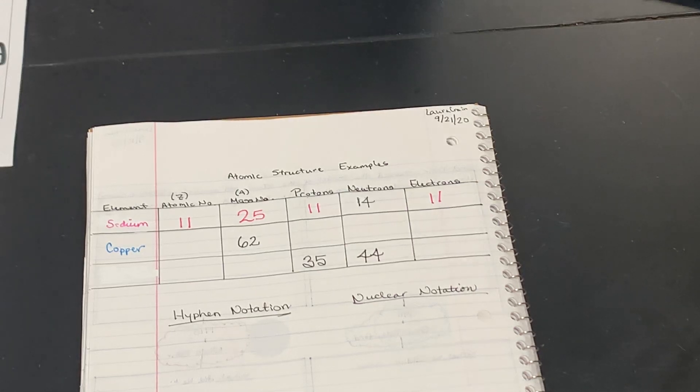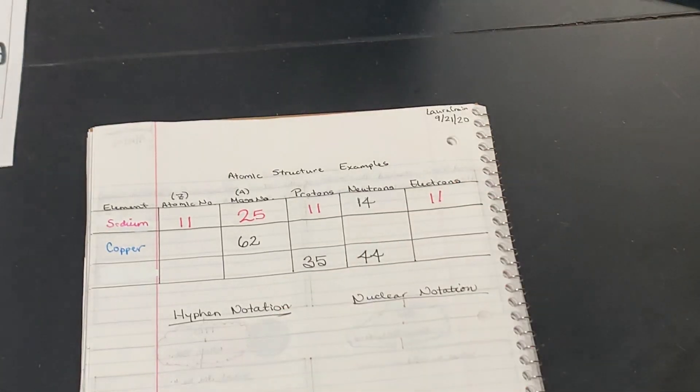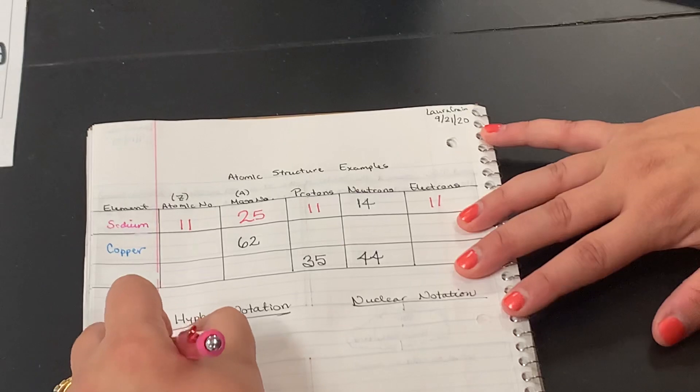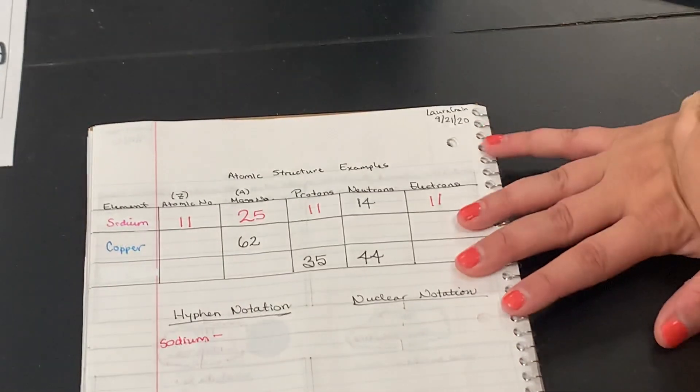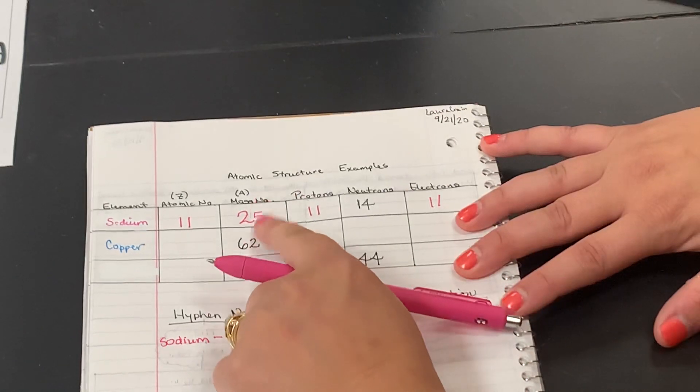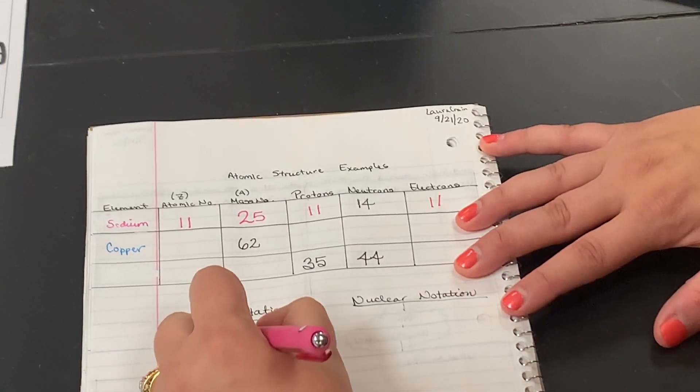So now let's write the two notations for this. For hyphen notation, we write the name of the element, so we're going to write sodium. Then we write a dash or a hyphen, and then the mass number. The mass number for sodium is 25, so this is sodium-25.